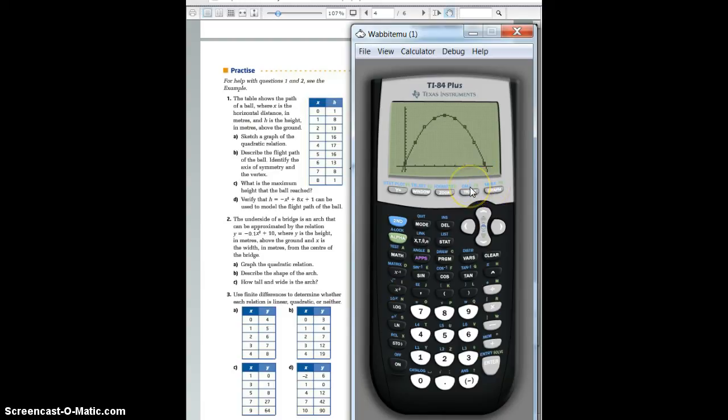Now we can begin looking for the axis of symmetry and the vertex. Basically, the axis of symmetry is the x value of the vertex. So let's find our vertex first. We're going to go second, calculate. We're going to find the maximum. We're going to go a little bit before it, so maybe like here, and a little bit after it, like here. And we don't want to guess because we want the answer. So we know that the maximum is 4 and 17, which is right there. That's the vertex. So we now know that the vertex, the axis of symmetry value is 4. It's x equals 4. And that the vertex of this curve is 4, 17.